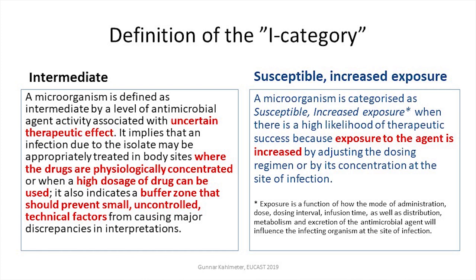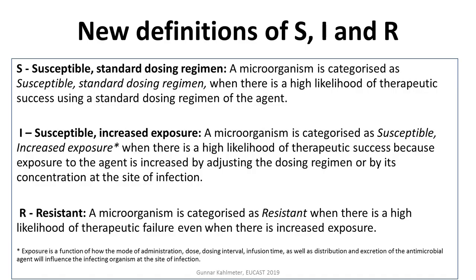So — the old definition of intermediate to the left, and the new category, susceptible increased exposure, to the right. As you can see from the red text, the components of the new definition are actually reduced to one: exposure to the agent is increased. So these are the new categories and the new definitions.